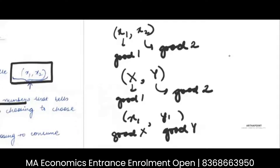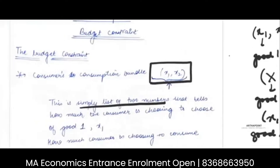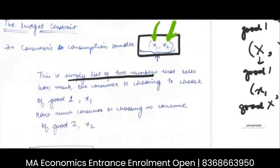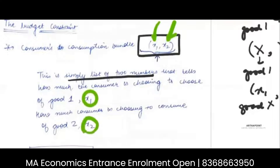The aim is just to show these two numbers. These two numbers basically tell me the level of consumption I am doing of the two commodities. So x1 tells me how much of good one I am consuming and x2 tells me how much of good two I am consuming.